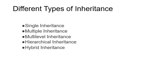There are many types of inheritance. The first one is single inheritance, multiple inheritance, multilevel inheritance, hierarchical inheritance, and hybrid inheritance. Let's start with single inheritance.